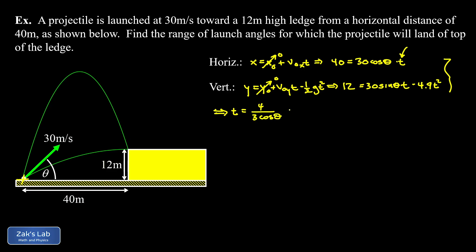Then we're going to sub that into the second equation. We end up with 12 = 30sin(θ)t. Subbing in that t, we replace it with 4/(3cos(θ)). And then I have this last term, this quadratic term, 4.9t². So 4.9 times (4/(3cos(θ)))².